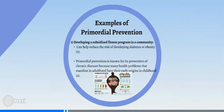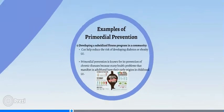One example of primordial prevention would be developing a subsidized fitness program in a community, which can help reduce the risk of developing diabetes or obesity.